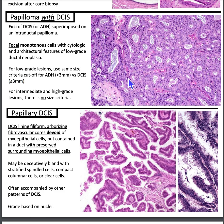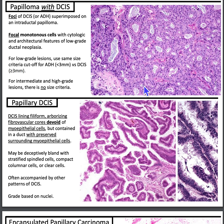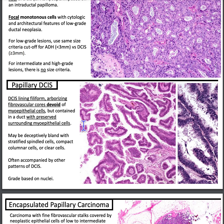Papillary DCIS means the entire lesion is DCIS. It looks filiform, arborizing — like tree-branching — with fibrovascular cores devoid of myoepithelial cells, but the lesion is contained in a duct with preserved surrounding myoepithelial cells. It can be deceptively bland with stratified spindle cells, compact columnar cells, or clear cells, so you have to look carefully.